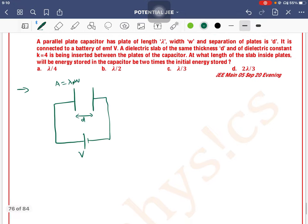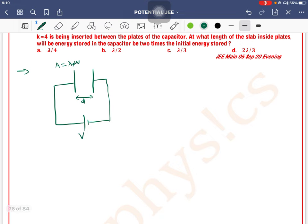Okay, so first of all, what do we do? Initial energy will be found. This is the capacitance formula: A epsilon not K divided by D. So C is equal to area lambda into width into epsilon not K, divided by D.